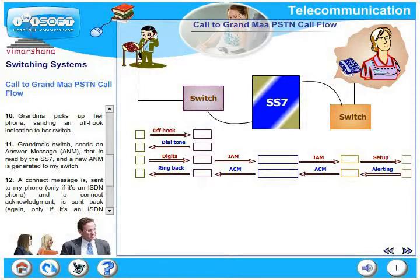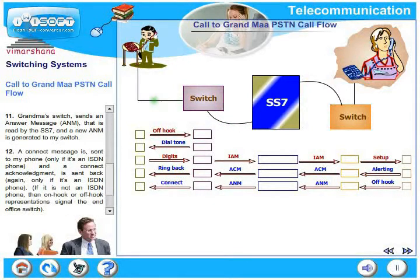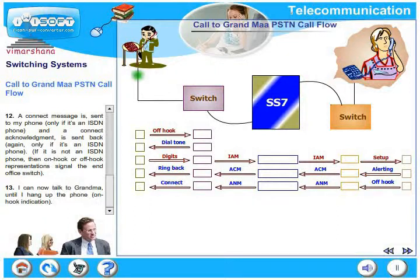Tenth action: grandma picks up her phone, sending an off-hook indication to her switch. Grandma's switch sends an Answer Message (ANM) that is read by the SS7, and a new ANM is generated to my switch. A connect message is sent to my phone — only if it is an ISDN phone — and a connect acknowledgement is sent back, again only if it is an ISDN phone.